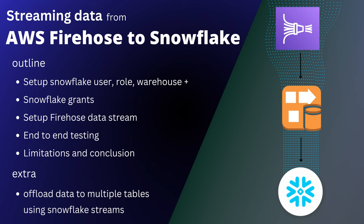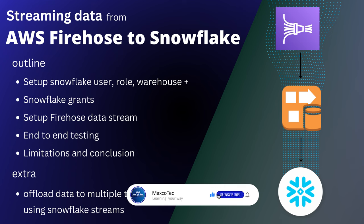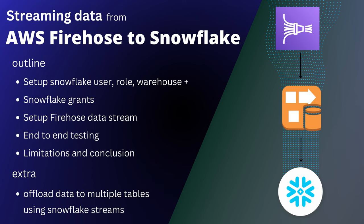We are going to stream the data from AWS Firehose Data Stream to Snowflake. The video outline includes: first, we are going to set up Snowflake resources like a user, role, warehouse, etc. Then we are going to grant permissions to this role on this user. Then we are going to set up the Firehose Data Stream with the destination as Snowflake. Finally, we are going to do end-to-end testing and see the limitations. And if time permits, I'm going to show you how we can offload the data to multiple tables in Snowflake using Snowflake Streams.